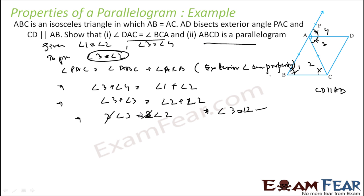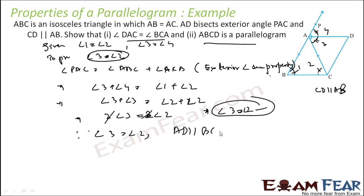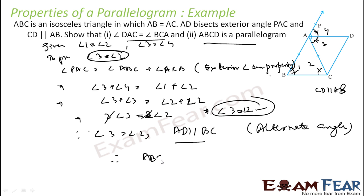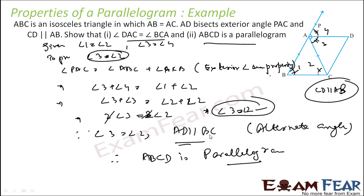Second part: prove ABCD is a parallelogram. AB is parallel to CD — that is given. Now we need BC parallel to AD. Since angle 3 = angle 2, these are alternate angles, so AD is parallel to BC. Since AD is parallel to BC and AB is parallel to CD, both pairs of opposite sides are parallel, and therefore ABCD is a parallelogram.